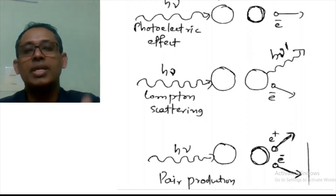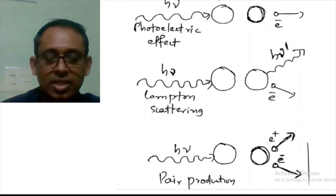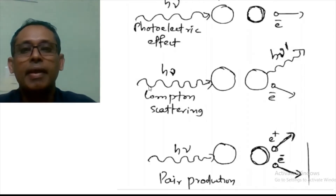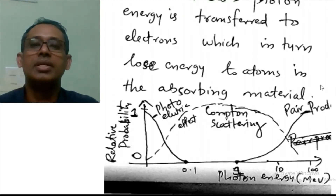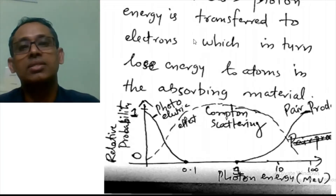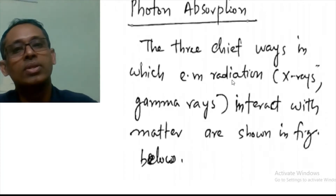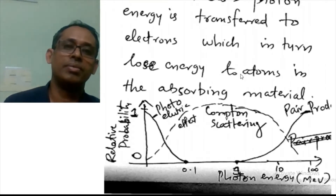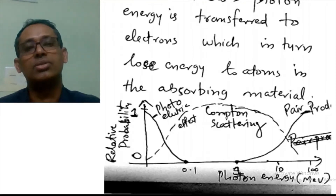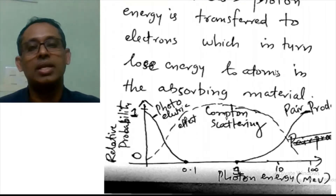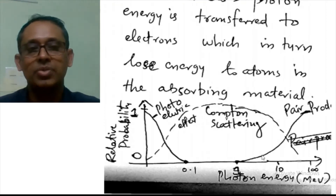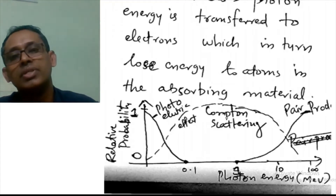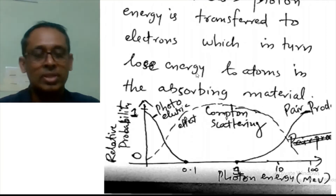These are the three chief mechanisms by which highly energetic electromagnetic radiations like X-rays or gamma rays interact with matter. In all these cases, the photon energy is transferred to the electrons, and the electrons in turn lose their energy to the atoms in the absorbing material. We have to compare all three of these processes.